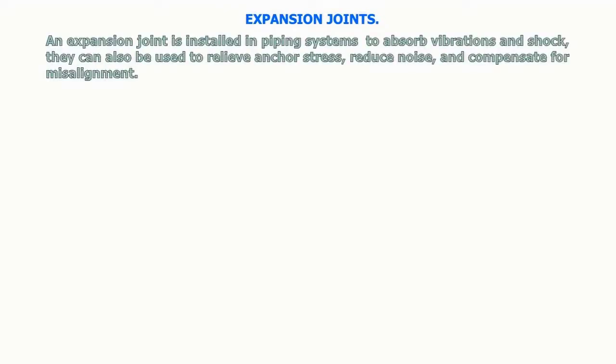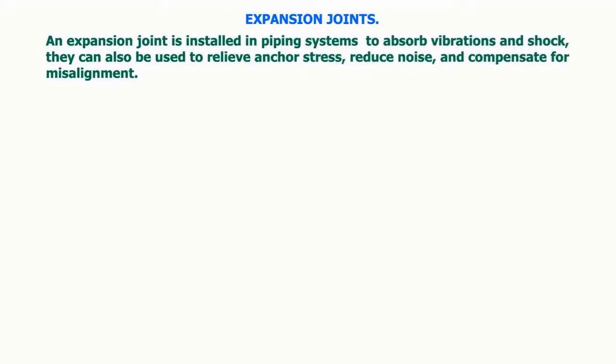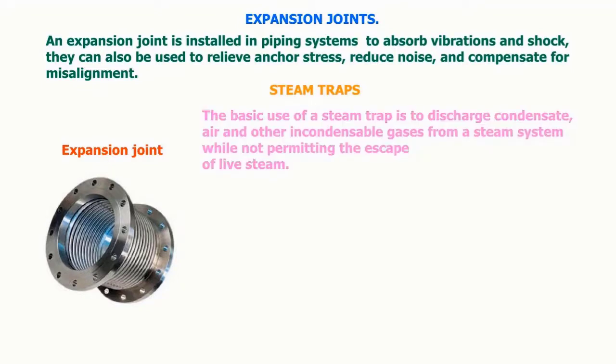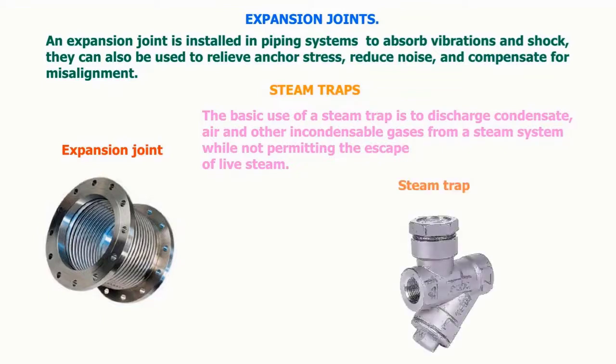An expansion joint is installed in piping systems to absorb vibrations and shock. They can also be used to relieve anchor stress, reduce noise, and compensate for misalignment. The basic use of a steam trap is to discharge condensate, air, and other incondensable gases from a steam system while not permitting the escape of live steam.